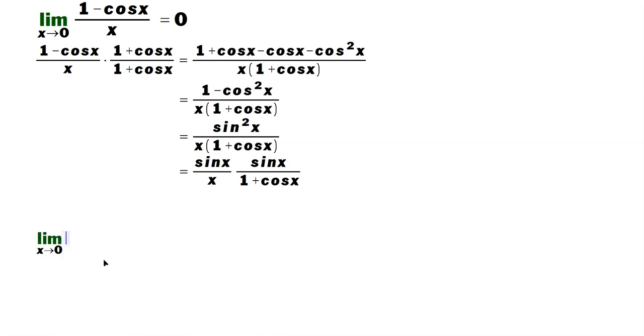So the limit as x goes to 0, and then you should replace the original expression with sine x over x times sine x over 1 plus cosine x. Then distribute the limit to each factor. That's a property of limits.